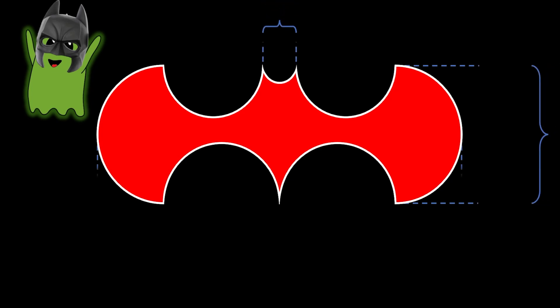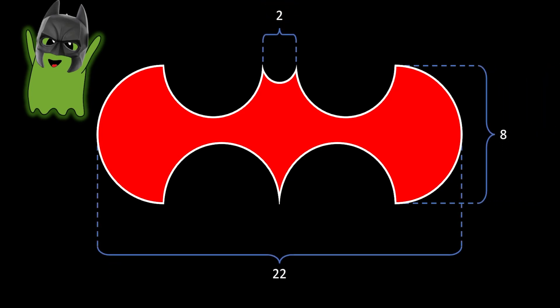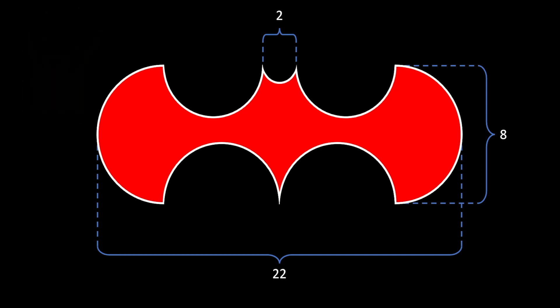Today we have a mathematical treat for all of you who like Batman — and let's face it, everybody likes Batman. We are going to calculate the area of this bat wing. We need some basic information about its dimensions: the overall length is 22, the overall height is 8, and the distance between the Batman horns is 2. If you want to try this yourself, this is a great time to pause the video.